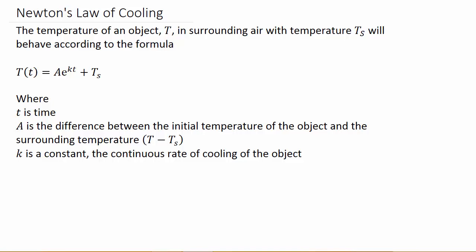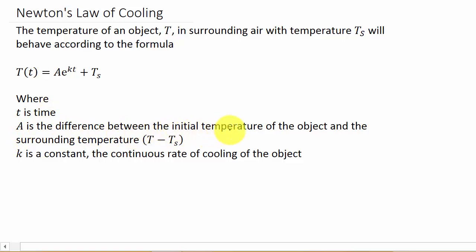In this video we're going to look at Newton's Law of Cooling. It says the temperature of an object T, in surrounding air with temperature T sub S, will behave according to the formula: T of t equals A times E to the Kt plus T sub S. Where t is time, A is the difference between the initial temperature of the object and the surrounding temperature, and K is a constant — the continuous rate of cooling of the object.